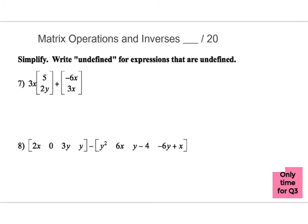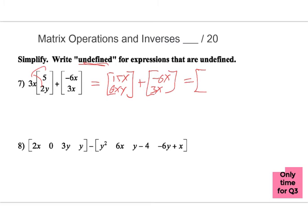Moving on to some matrix stuff — we're combining things or deciding if they're undefined. Undefined results come when we cannot combine them, such as having different numbers of elements. For the first one, I'll do the scalar multiplication first: that gives us 15x and 6xy. Adding the other matrix — 6x and 3x — we get 15x minus 6x on top and 6xy plus 3x on the bottom, giving 9x on top and 6xy + 3x on the bottom.